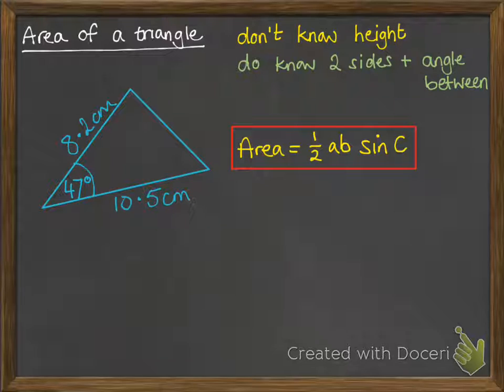The area of that triangle is half AB sine C, so we need to be able to label that up correctly.